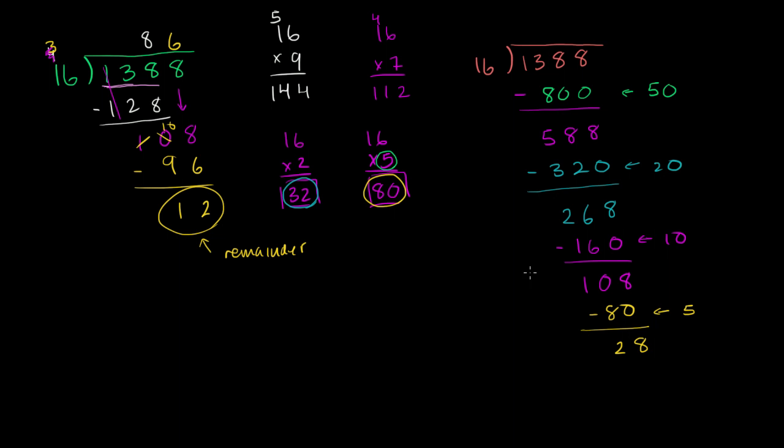And now it's pretty simple. How many times does 16 go into 28? Well it only goes into it one time. And then when you subtract 16 from 28, 8 minus 6 is 2, 2 minus 1 is 1. You're left with a remainder of 12.